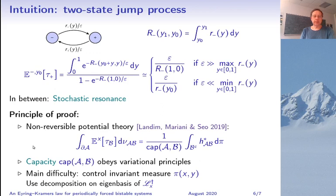Now here's a short idea of the proof. The proof is not based on the two-state jump process. It is based on this non-reversible potential theory by Landim, Mariani and Seo I mentioned, and what this theory gives you in particular is a formula relating the expected first hitting time of a set B starting on the boundary of a set A with a particular measure, and this is related to something called the capacity of the sets A and B, which obeys various variational principles that allow you to obtain good bounds on the capacity.